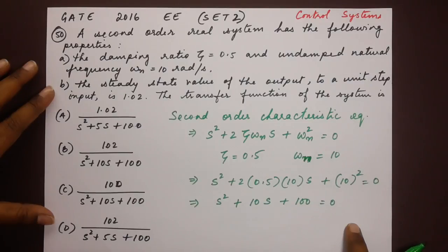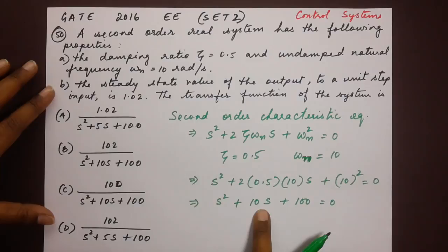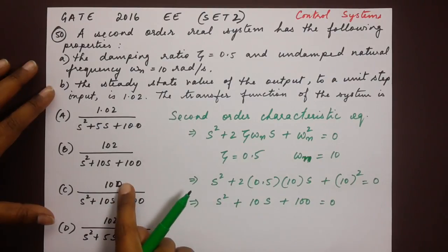Let us see, the denominator matches with option B and option C. We have both of these options with the denominator of the characteristic equation s² plus 10s plus 100. But we have a different numerator.